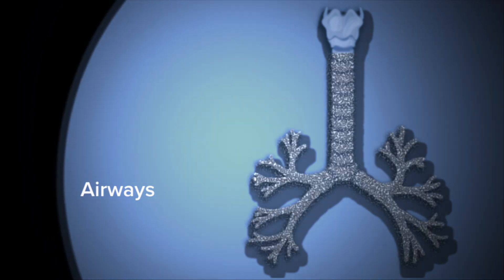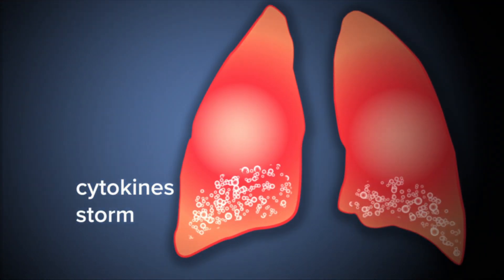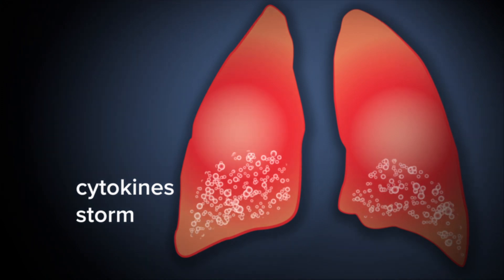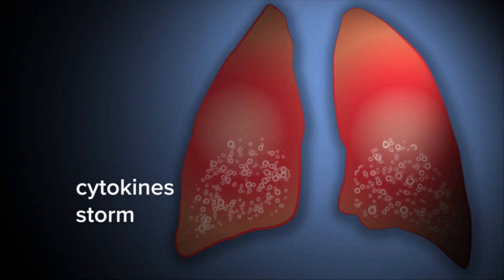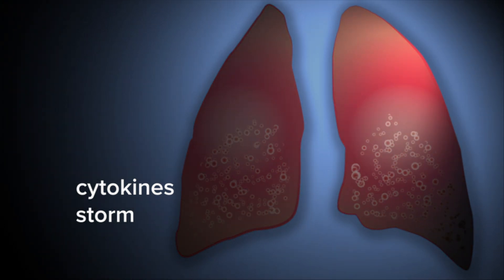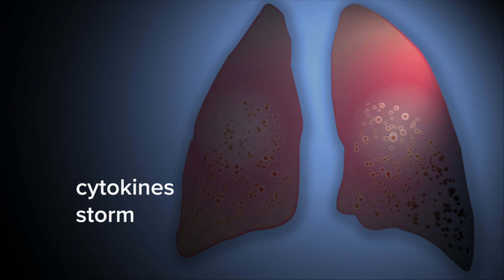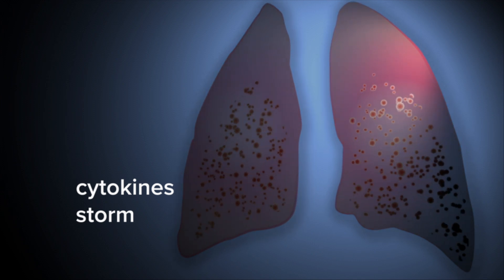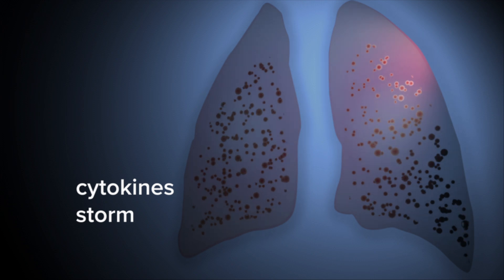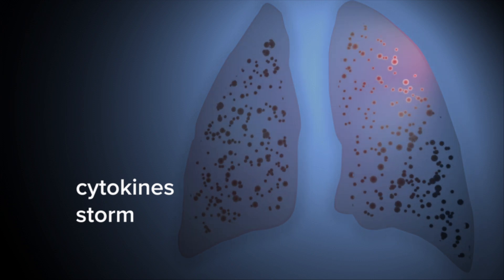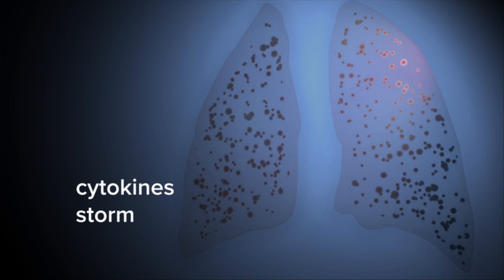In some infected individuals, the virus and/or cell damage provokes a massive storm of cytokines, the immune system's alarm signals, to recruit and activate immune cells. They in turn attack the virus and unfortunately also healthy tissue, which can result in pulmonary destruction.